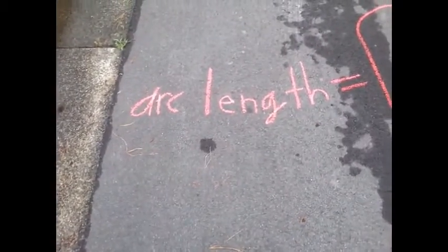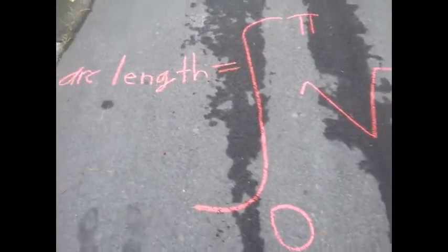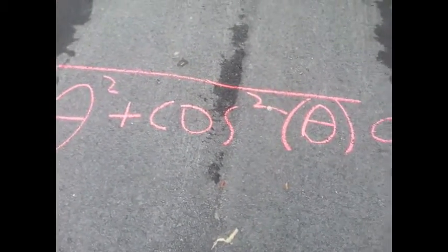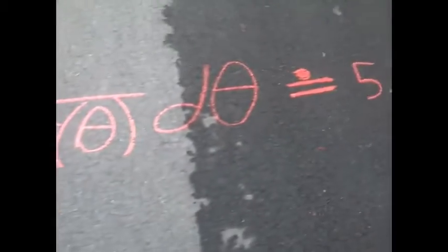Alright, so, the integral is going to be the integral of the square root of sine squared theta plus cosine squared theta from 0 to pi. Evaluating this gives us a value approximately equal to 5.634.